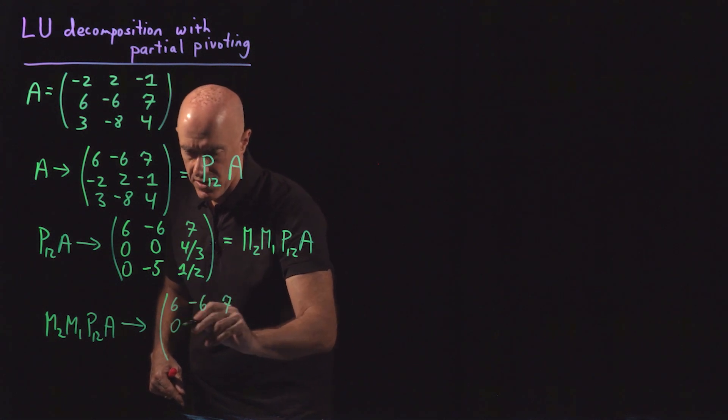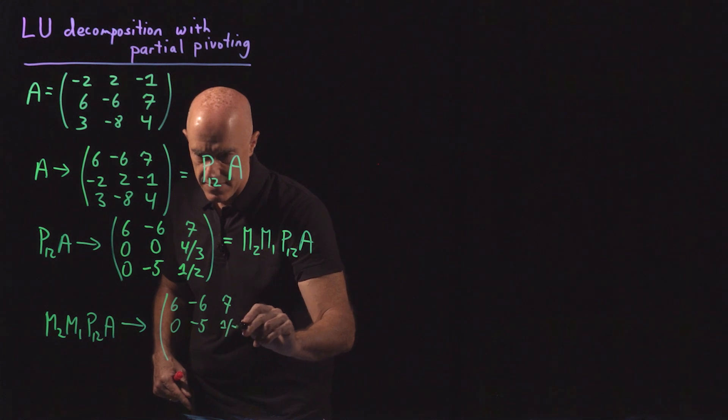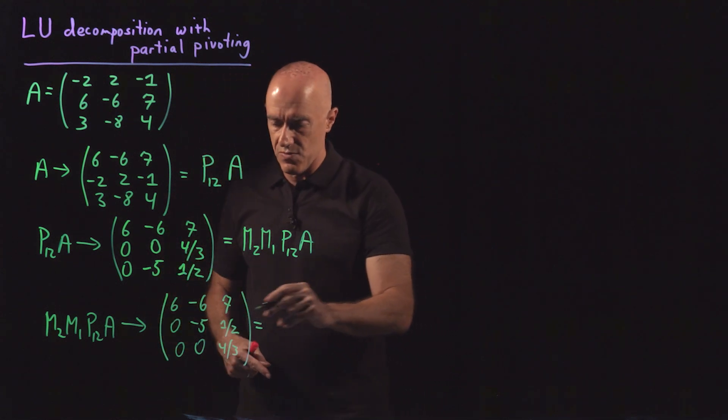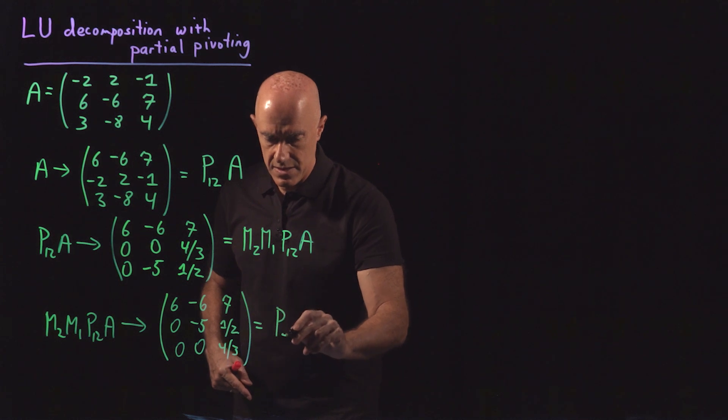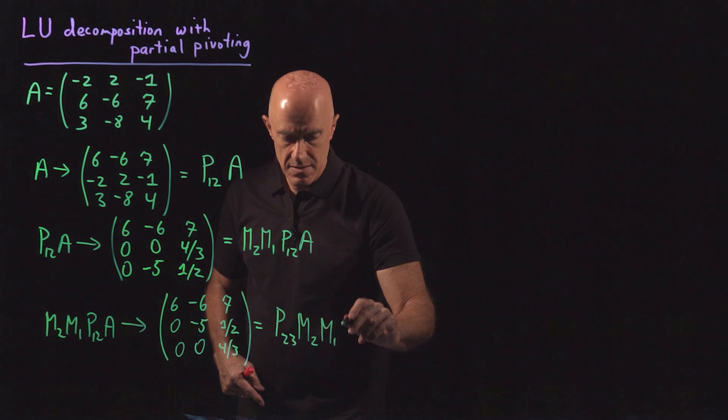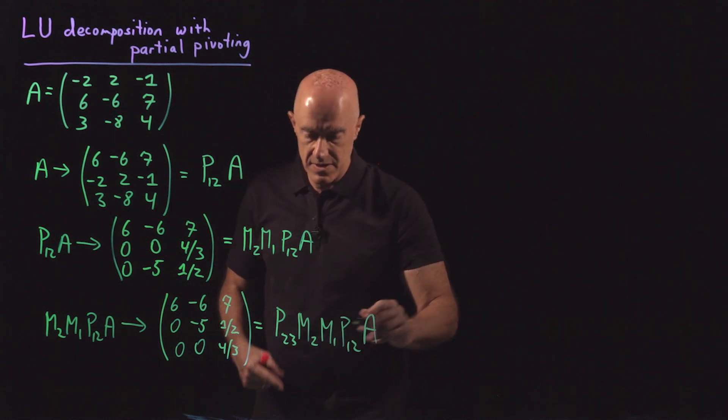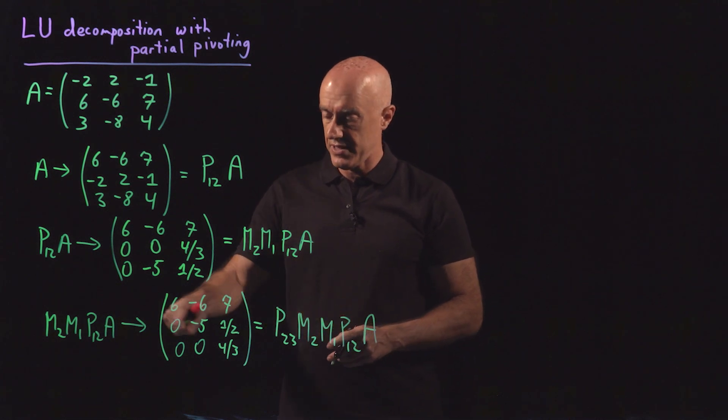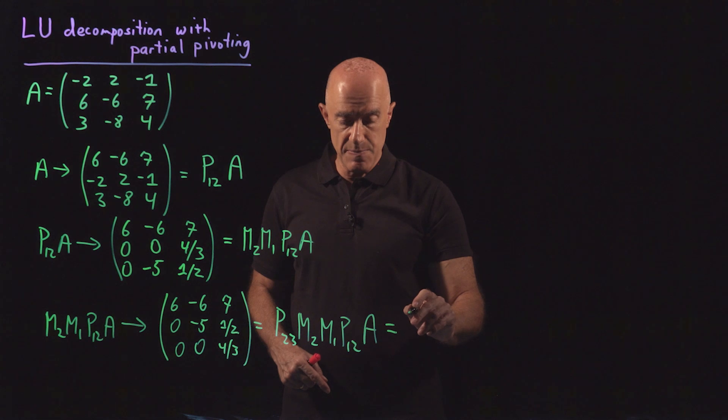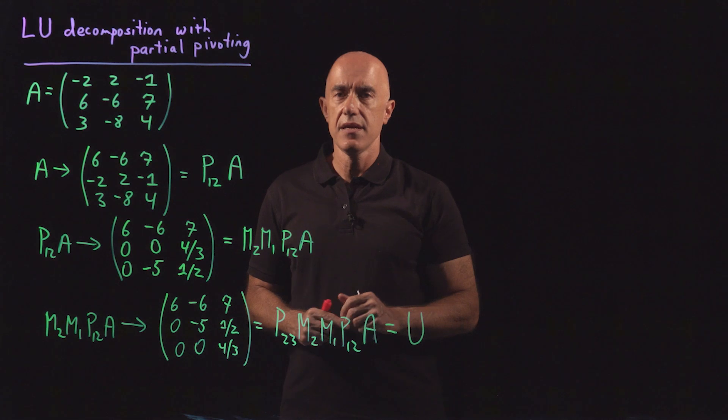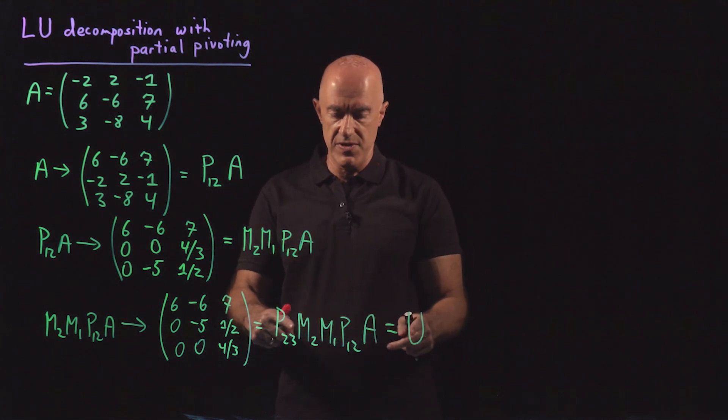0 minus 5, 1 half. And 0, 0, 4 thirds. And this one, now we flip the rows. So we flip 2 and 3. So that's P23, M2, M1, P12A, product of all of these matrices, the permutation matrices and the elementary matrices. And this final matrix then is upper triangular. So that's our U. So we've completed the Gaussian elimination with partial pivoting step.